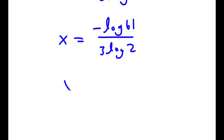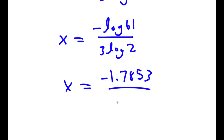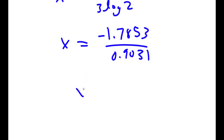So negative log 61 — log 61 is 1.7853, so this is negative 1.7853 over 0.9031, which is equal to negative 1.7769.